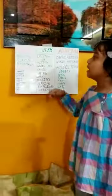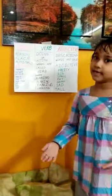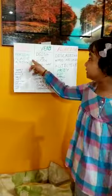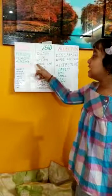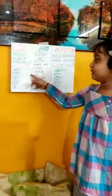So first I will tell you about noun. Noun is the name of a person, place, animal, and thing.